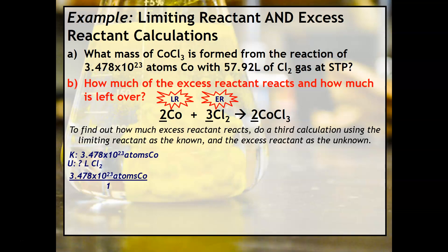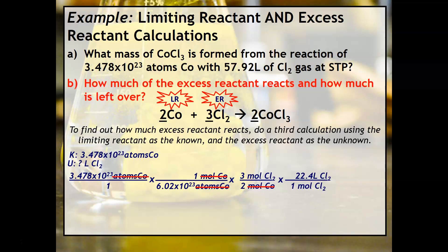We'll start with our known over 1. We have atoms, so we'll use 6.02 × 10²³. Be careful here — the mole ratio is not between a reactant and a product; it's between the two reactants. So we'll have 2 moles of cobalt to 3 moles of chlorine. The final step uses 22.4 liters since our unknown is volume of Cl₂. When you do this calculation, you get 19.41 liters of Cl₂ — this represents how much of the chlorine reacts.